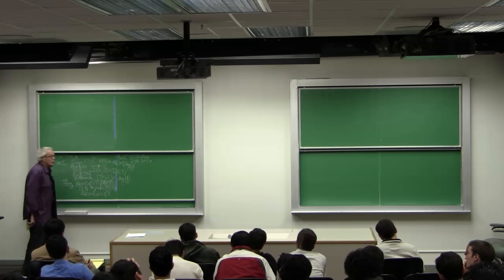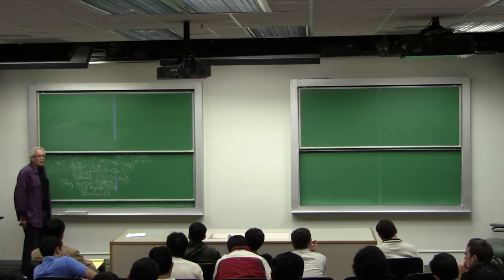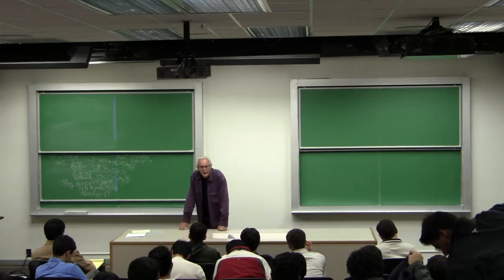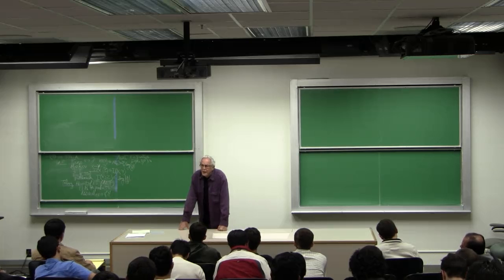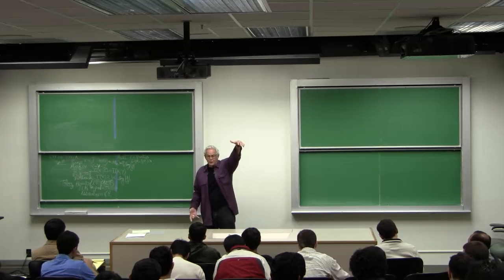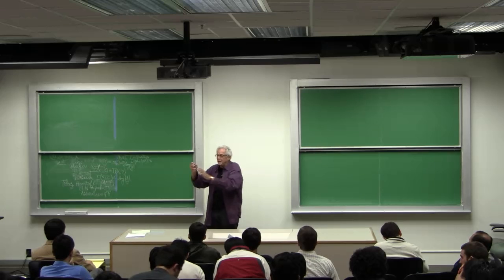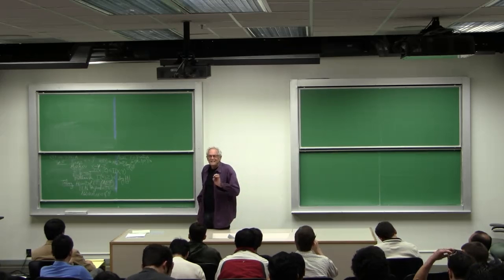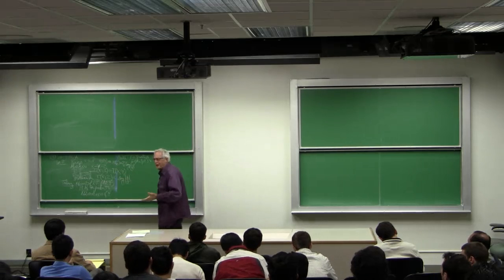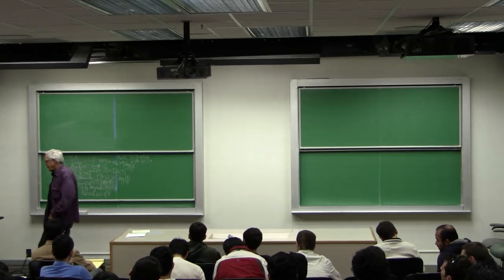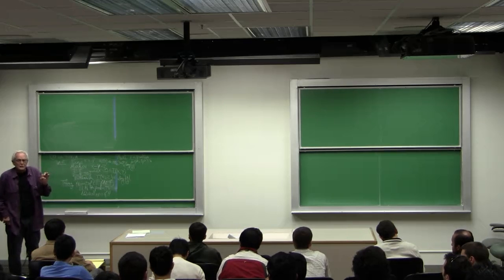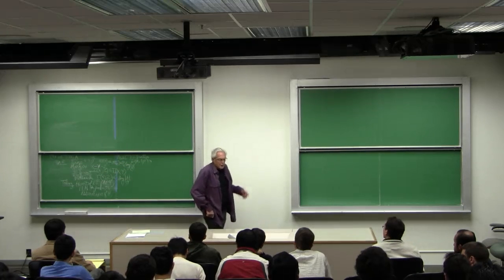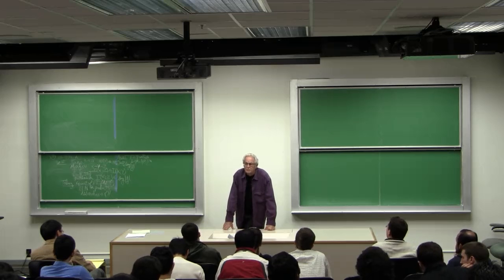All right, today we want to prove the asymptotic equipartition property, which in a way is the heart of information theory, or at least communication theory aspects of it. Well, more than that. It's the reason why we replicate problems and we have error-correcting codes with lots of information bits and lots of check bits. We go to the law of large numbers where everything looks sort of uniform and the same. And that allows us to make precise statements.